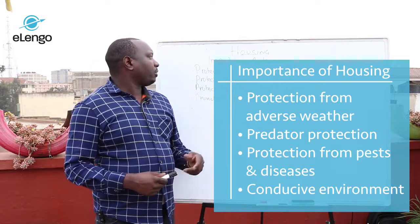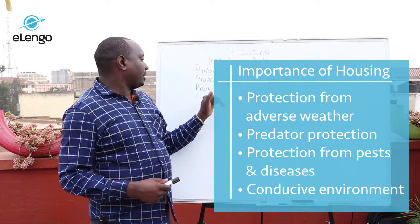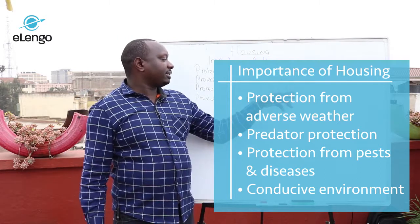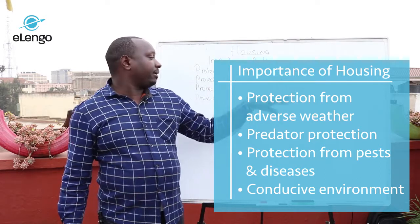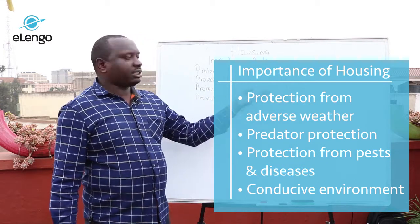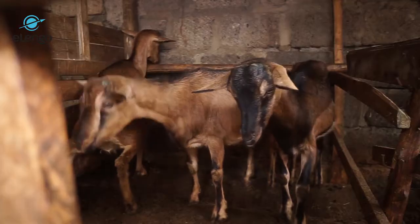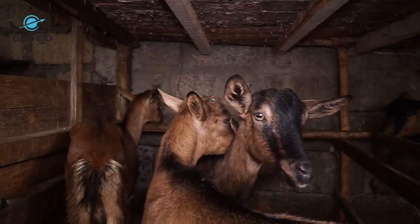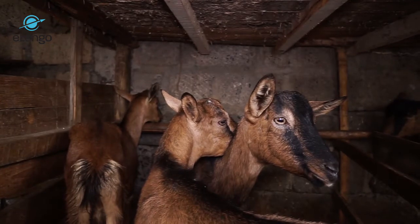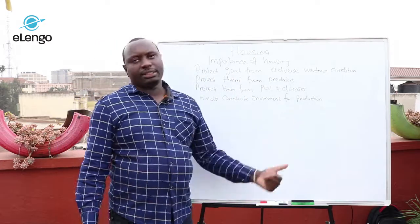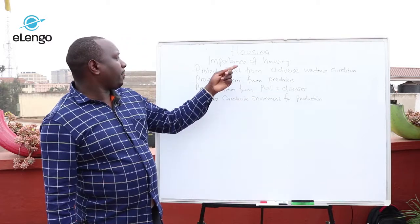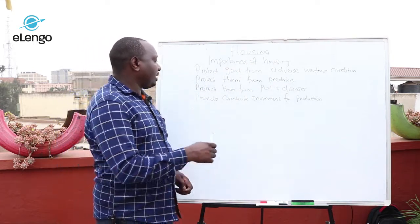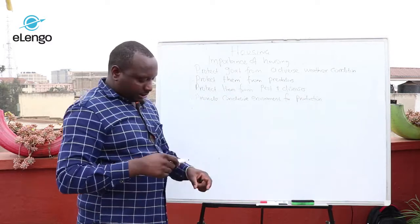Another reason why we house goats and other animals is to protect them from pests and diseases. Some diseases are airborne while others are transmitted by pests — for example, ticks. If you control the movement of other animals into the shed, you reduce the movement of pests which can infect the animal, so you protect the goats from these diseases. We also house goats to provide a conducive environment for production.